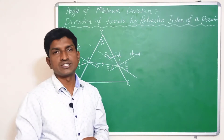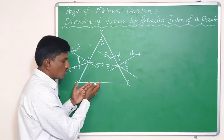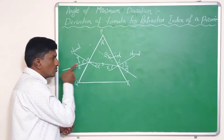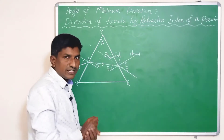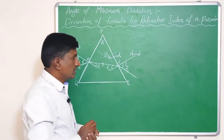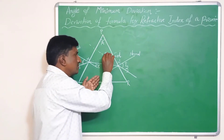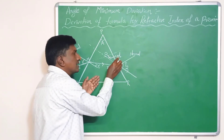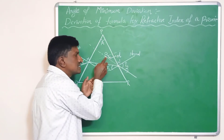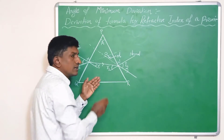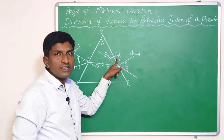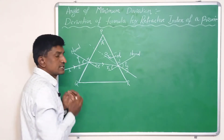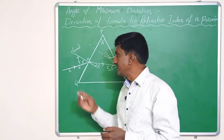We call this the angle of deviation because if there were no prism, the light ray should travel in a straight line. But because of the presence of the prism, it passes in a different direction — the incident light ray deviates by this much angle. That is why this angle is called the angle of deviation. Now, what happens if we increase the angle of incidence?